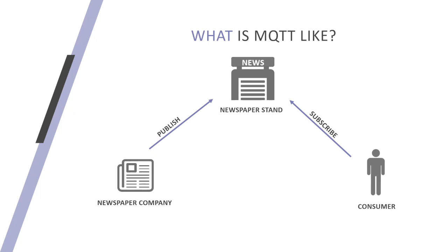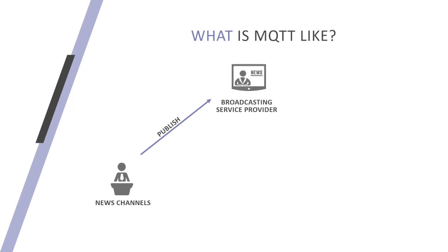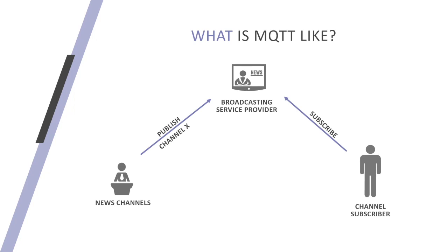These two entities communicate over a common topic of interest called the latest news. Technology has advanced so we can now get the latest news over television, but the concept remains the same. The news channels publish the latest news over a certain channel. These channels get published to a broadcasting service provider which acts like a broker. The consumer subscribes to these channels — the news agencies publish over channel X and the consumer must subscribe to the same channel X to get that information. This is similar to the concept of a topic in MQTT.